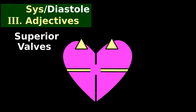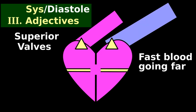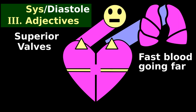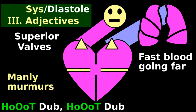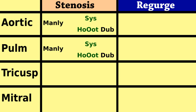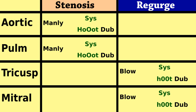Since superior valves control fast blood going far, they have louder, more forceful murmurs — chut-dub, chut-dub. Bottom valve murmurs whine like blowing wind — chut-dub, chut-dub.